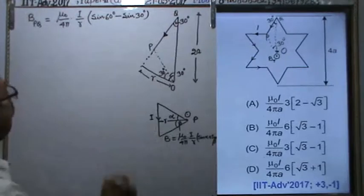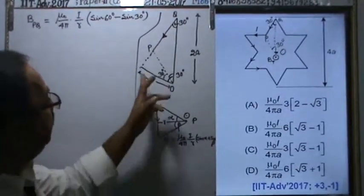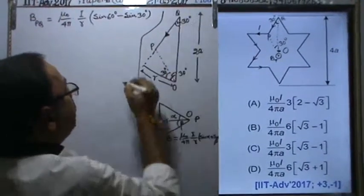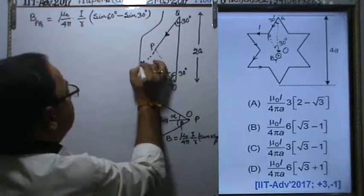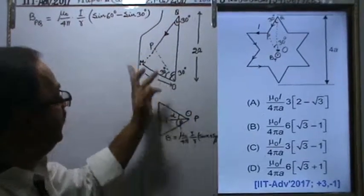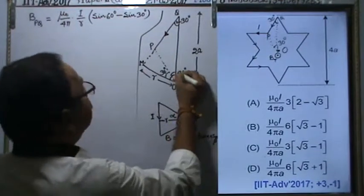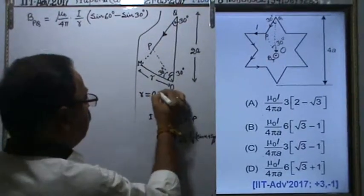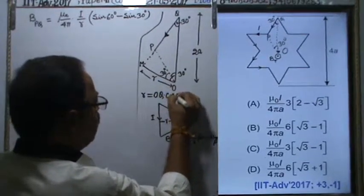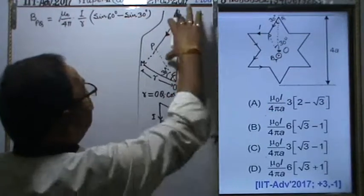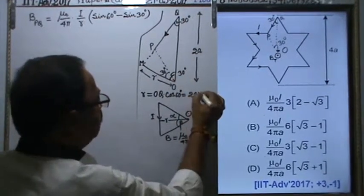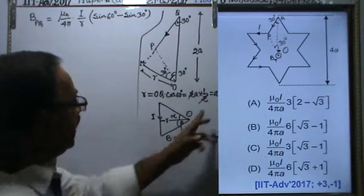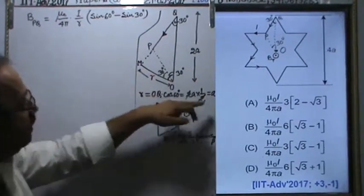Now we need to calculate the value of r. This is a right angle. In the right angle triangle QMO, this angle is 60 degrees. So r will equal OQ cos 60 degrees. OQ is 2a, so this is 2a times cos 60 degree, which is 1/2. Therefore r equals a.